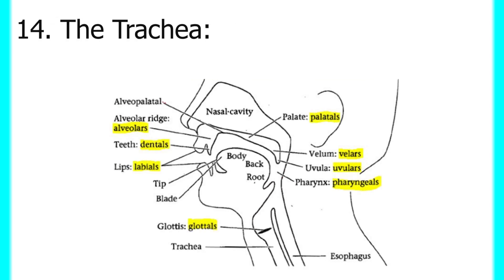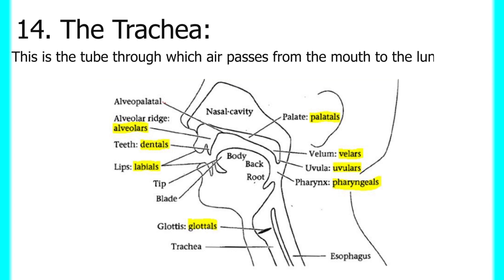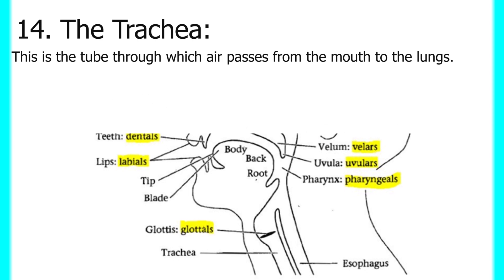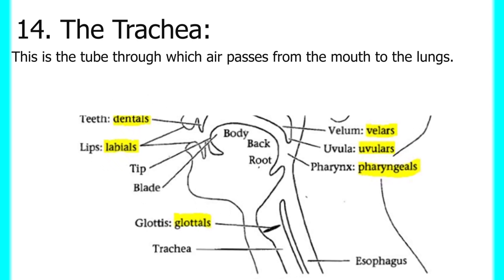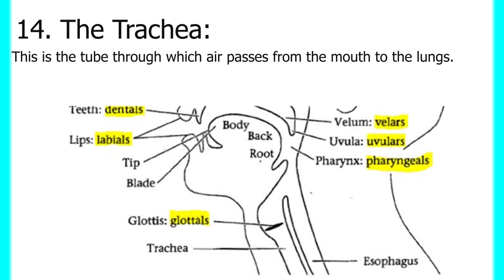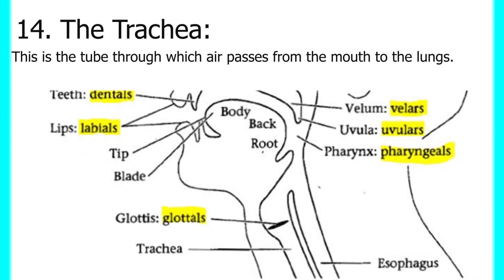Next we have the trachea — the tube through which air passes from the mouth to the lungs. The larynx and the trachea are very important in speech production. If you can manage how air passes from the larynx and trachea down to the lungs, you will gain mastery in speech production.